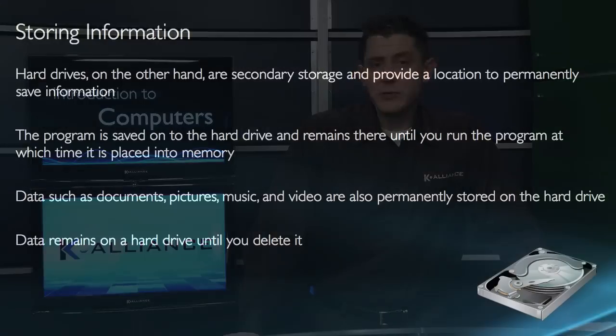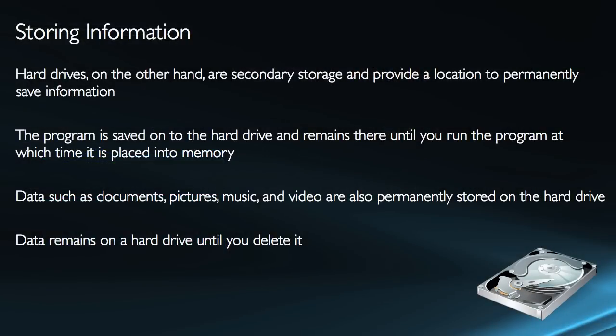Memory is very fast — it's high speed getting information in and out. Hard drives, on the other hand, provide what's known as secondary storage, and it's a permanent storage location. So if you want to permanently save something, you store it on the hard drive so it remains there. Every time you run a program or open a document, that information is placed into a specific location in memory — that's how you access it.